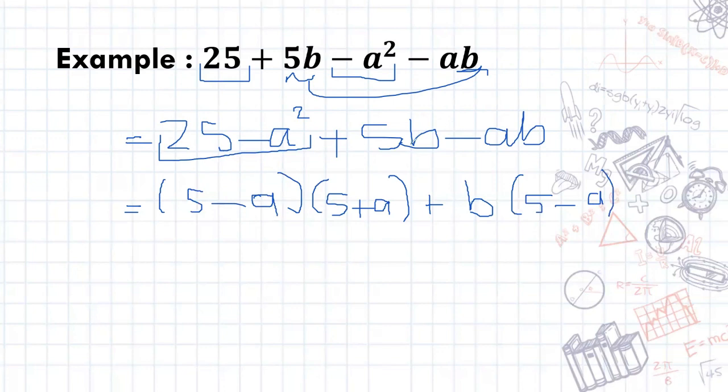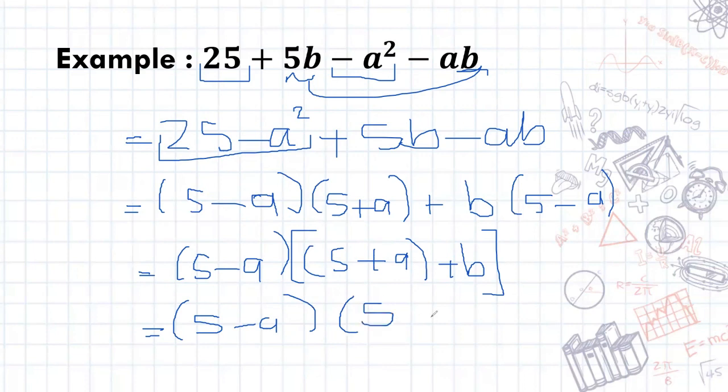So what we then have is two common brackets, the 5 minus a. So we'll have 5 minus a as the common bracket. Then I'll have 5 plus a as one bracket plus b inside a big bracket. We'll just simplify this bracket. So it's quite straightforward. It's just 5 minus a. And when we simplify and take away the brackets, it's just 5 plus a plus b. And there we go. We're all done and sorted.